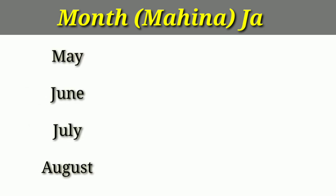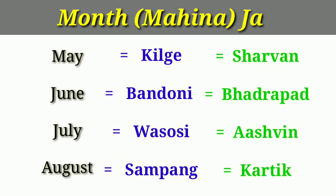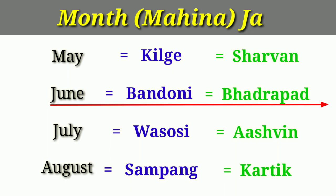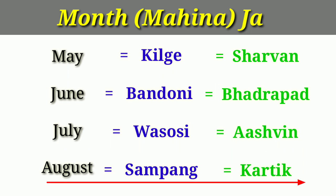Now May, June, July, August. In local language: May — Kukhe, June — Bandoni, July — Wasosi, August — Sampang. Now in Hindi: May — Shravan, June — Bhadrapat, July — Ashwin, August — Kartik. So: May: Kukhe — Shravan. June: Bandoni — Bhadrapat. July: Wasosi — Ashwin. August: Sampang — Kartik.